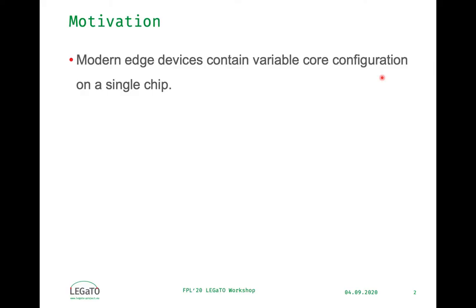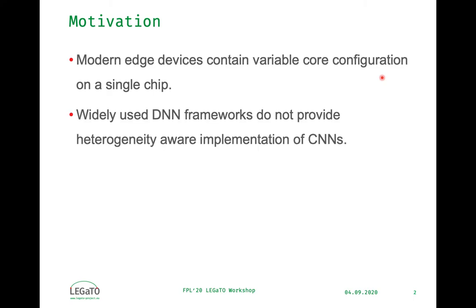Modern edge devices contain variable core configurations on a single chip, for example energy efficient cores and high performance cores. An example is NVIDIA's Jetson TX2. Widely used DNN frameworks such as TensorFlow and Caffe, to name a few, do not provide heterogeneity-aware implementation of CNNs.